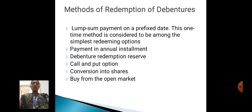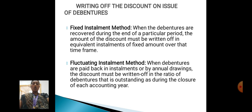Methods of redemption of debentures: Lump-Sum Payment — this method is a one-time method considered to be among the simplest redeeming options. Payment in annual installments, debenture redemption reserve, call and put options, conversion into shares, and buying from the open market.